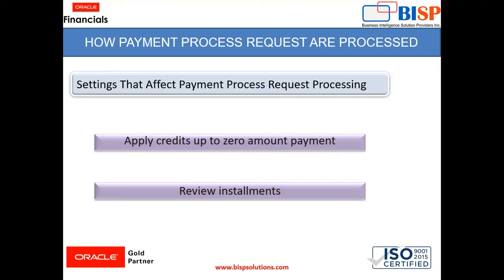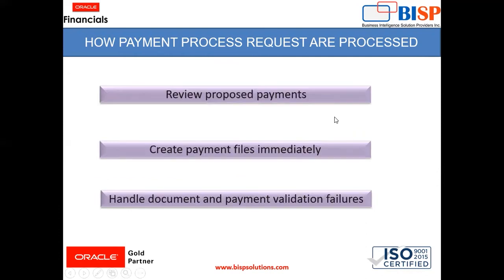When we prepare a payment process request template in the instance, there are various processing options available. There are four options: apply credit up to zero amount payment, review installment, review proposed payment, and create payment files immediately.